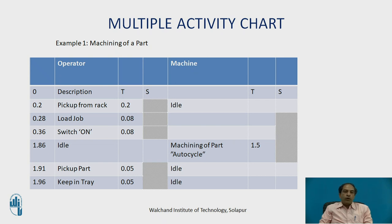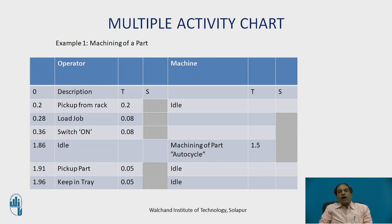The operator then loads the job into the machine — the time required is 0.28 minus 0.2, which equals 0.08 minutes. Again, the machine remains idle. Next, the operator switches on the machine, which takes 0.08 minutes (from 0.28 to 0.36). In this step, both operator and machine are occupied, shown as a hatched area. Once started, the machine goes into auto cycle for machining, which takes approximately 1.5 minutes. During this time, the machine is busy and the operator is idle.